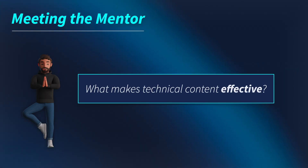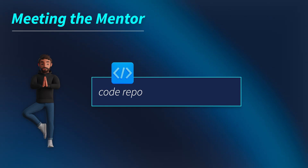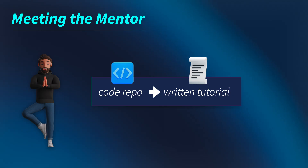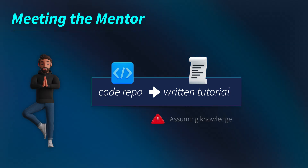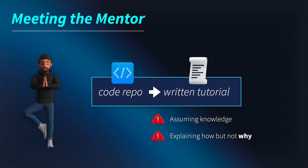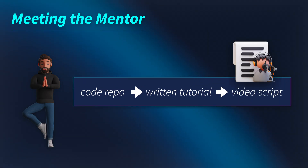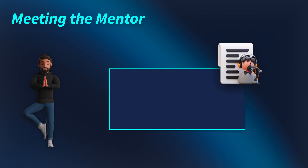The younger the person is, the more true that is. Creating high quality video content can be intimidating, so what actually makes technical content effective? Effective content is engaging content. Start with clean code, nail down the technical details in a well-scoped relatable example, then translate that into a written tutorial walking through the code step by step. The two biggest pitfalls are making too many assumptions about what the learner already knows, and only teaching how to do something but not why. When someone understands the why, they can adapt their learning to other use cases.